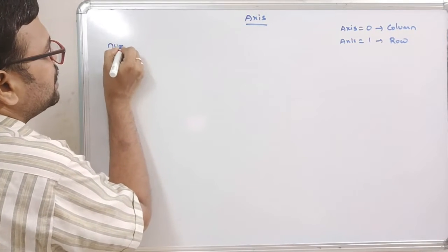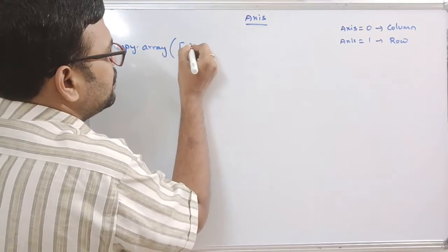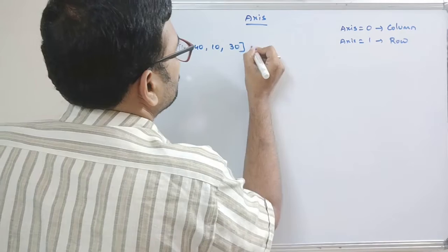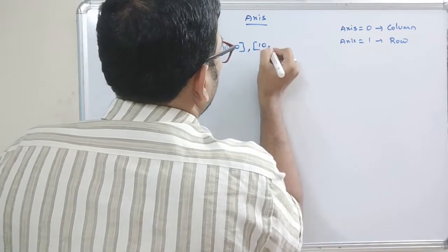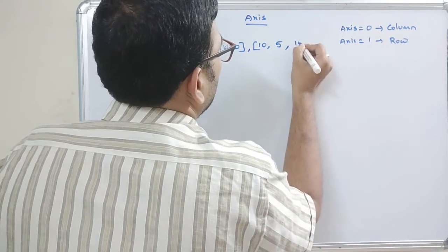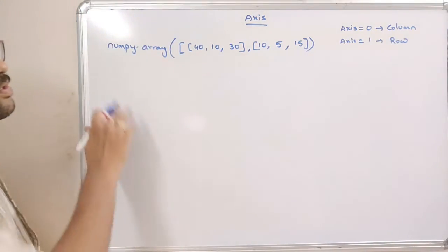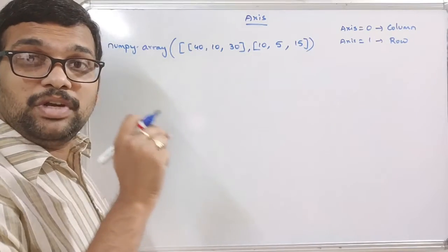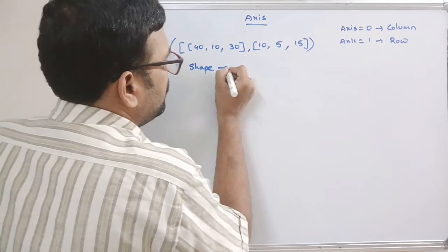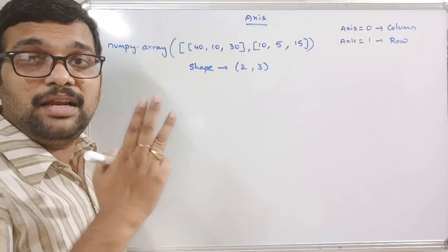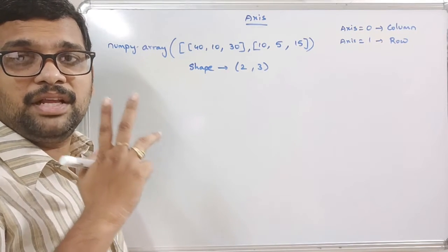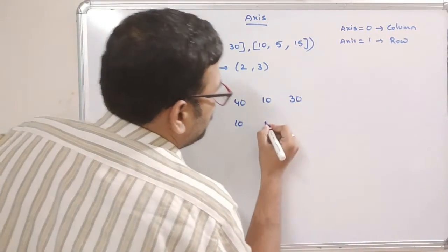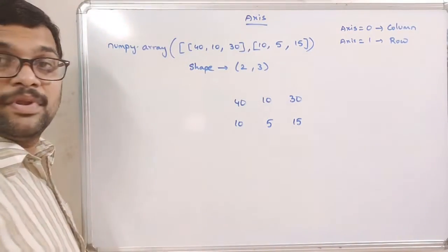To represent a two-dimensional array, we use numpy.array and pass a multi-dimensional input. For example: 40, 10, 30 in the first row, and 10, 5, 15 in the second row. After executing this we get a two-dimensional array with shape two by three — two rows each having three elements. In matrix format: row one is 40, 10, 30 and row two is 10, 5, 15.